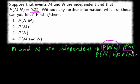Therefore, this one must be 0.22 because they're equal. So the answer is, we know that P of M is 0.22.